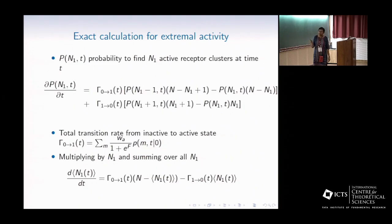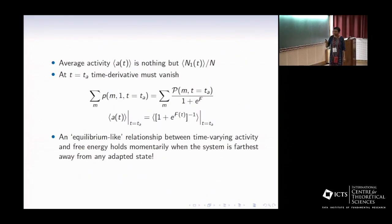We explain this observation from exact calculation. P(n1,t) is the probability to find n1 active receptor clusters at time t. We can write down the master equation for this quantity. What enables us to calculate the extremal condition is the observation that at time t equals t*, when activity is maximum or minimum, the d/dt of that should be 0. Time derivative should vanish. This allows us to perform the calculation exactly and derive this condition at t equals t*.